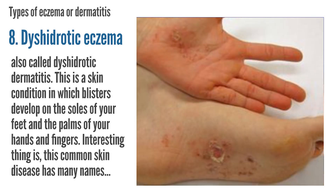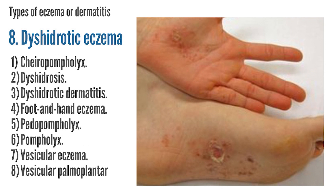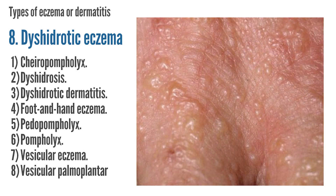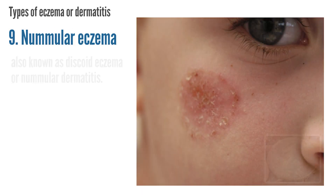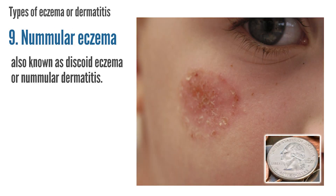Interestingly, this common skin disease has many names, including Cheiropompholyx if it affects the hands, and Pedopompholyx if it affects the feet. Other names include Dyshidrosis, Dyshidrotic Dermatitis, Hand and Foot Eczema, Pompholyx, Vesicular Eczema, and Vesicular Palmoplantar Eczema. Nummular Eczema, also known as discoid eczema or nummular dermatitis.